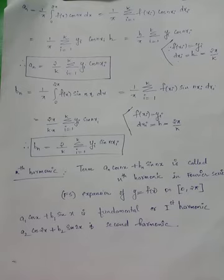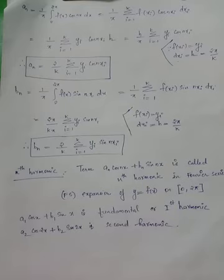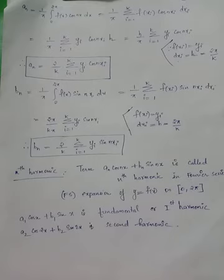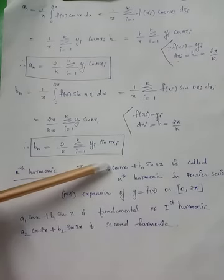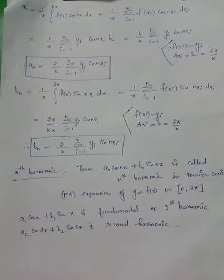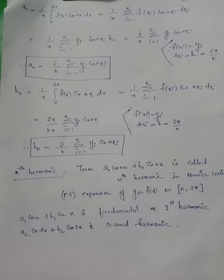Regarding the definition of the nth harmonic: a general term aₙ cos(nx) + bₙ sin(nx) is known as the nth harmonic. We know that Fourier series involves expressing a periodic function in terms of cosine and sine terms, and hence Fourier series is also known as a trigonometric series. So the nth harmonic is the sum of the terms aₙ cos(nx) and bₙ sin(nx). For example, the third harmonic is a₃ cos(3x) + b₃ sin(3x).